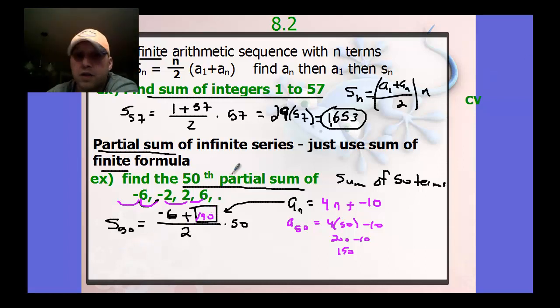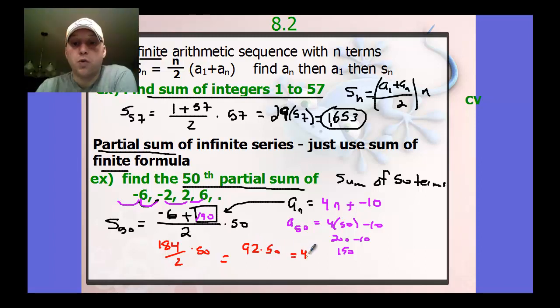And that's the value we've got to plug in here. So then if we actually evaluate that, we have negative 6 plus 190. So we're at 184 over 2 times 50, which is equal to 92 times 50, or just 4,600. So that would be the sum of those 50 terms.